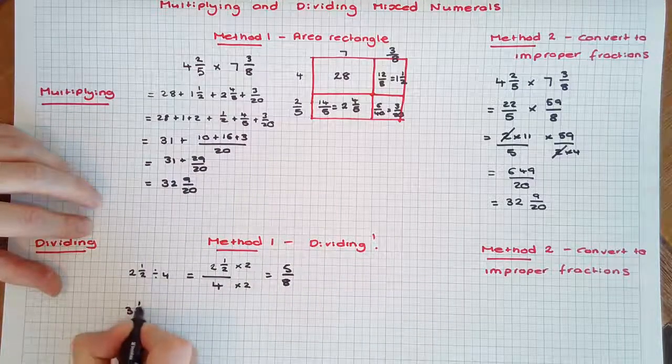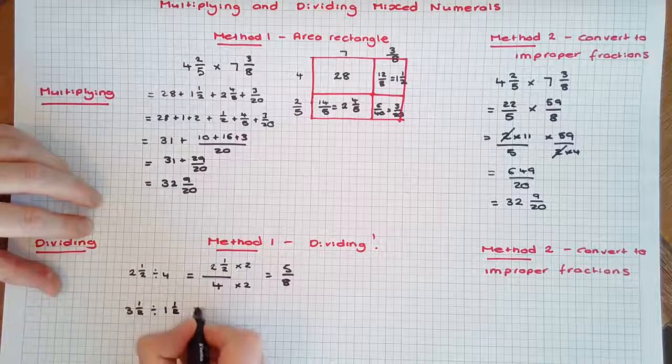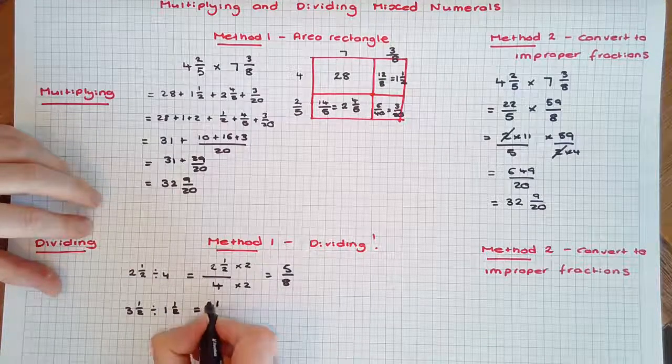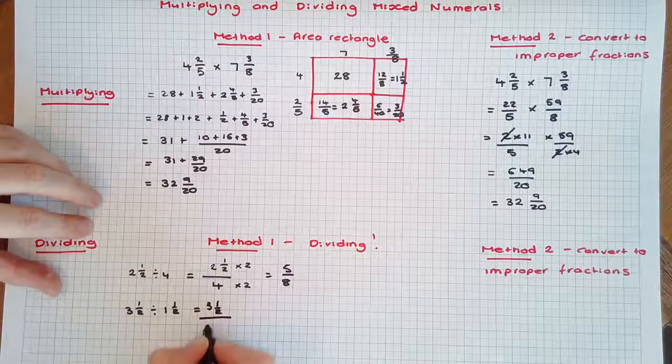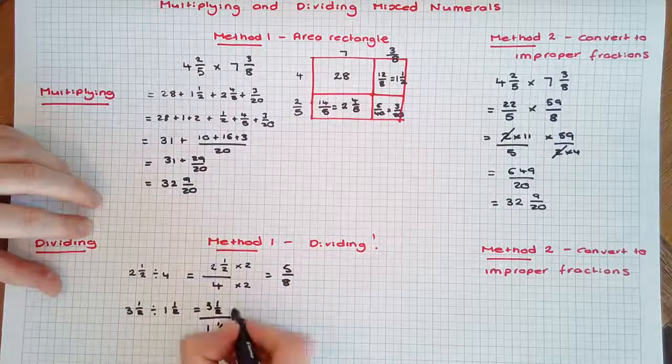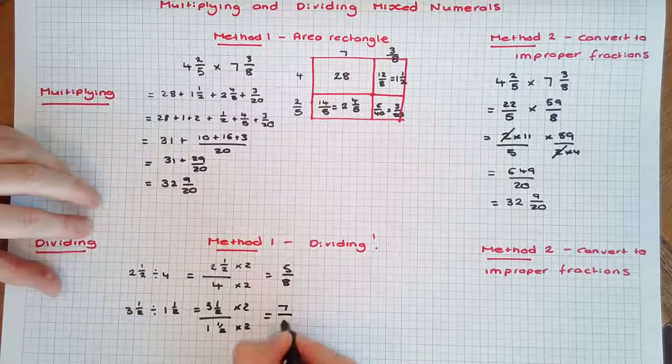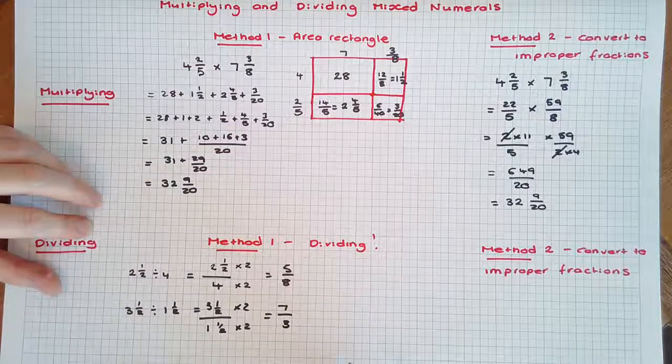Let's take a little more challenging problem: 3 1/2 divided by 1 1/2. Again, we can set it up as a fraction: 3 1/2 over 1 1/2. We've got a fraction in the numerator, so we'll multiply the numerator and denominator by 2. So we end up with 7/3. But what if the fractions had different denominators?